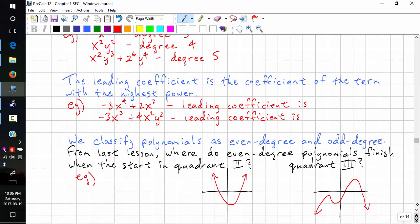The leading coefficient is the coefficient of the term with the highest power. So this has degree 4, degree 3. This has power 4. This has power 3. So this is the highest power. So the leading coefficient is negative 3.